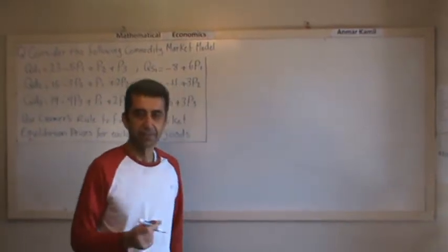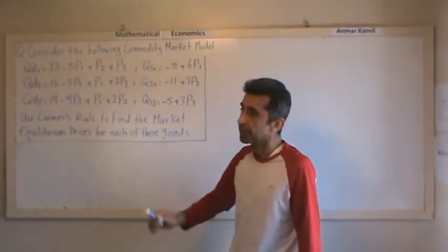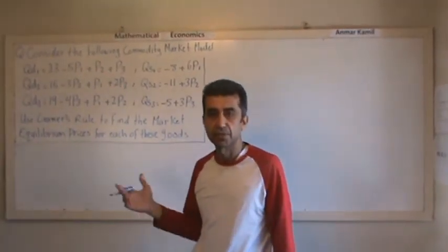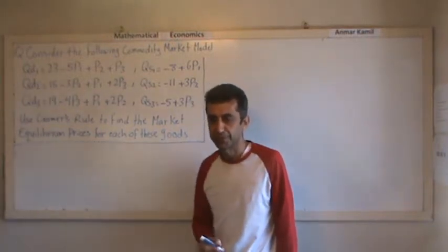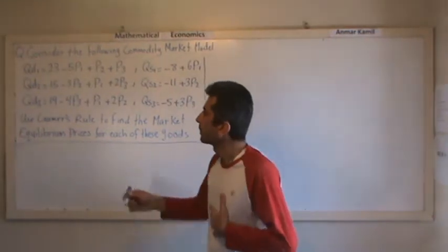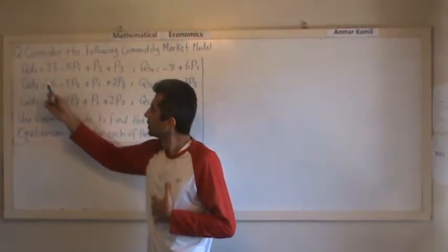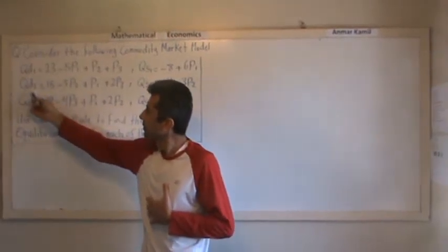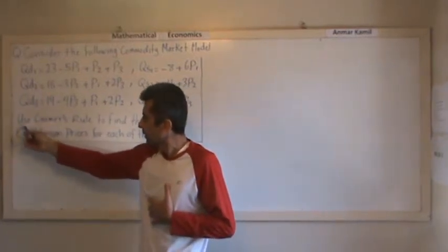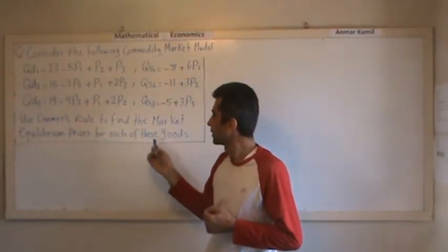Hello everyone, my name is Anmar Kamil. Today's topic is solving a question regarding the commodity market model. If you're taking a mathematical economics course, most likely you're going to come across a problem like the one on the board. The question says: consider the following commodity market model with QD1, QS1, QD2, QS2, QD3, and QS3, and use Cramer's rule to find the market equilibrium prices for each of these goods.